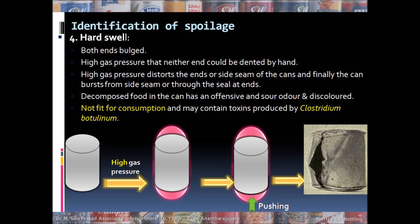Just like soft swell, hard swell is also characterized by bulging of both ends of the can. However, in the case of soft swell, the bulged ends can be brought back to a flat state by applying pressure. But in the case of hard swell, even after applying pressure, the bulged ends cannot be brought to their normal flat state, because there is microbial decomposition. Microbes decompose the food and produce carbon dioxide, causing such high internal pressure that the bulged ends cannot be reversed.